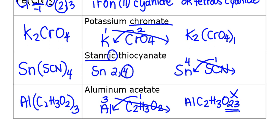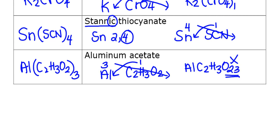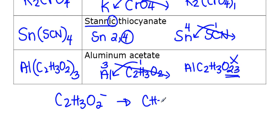One other thing to note about acetate: there are two ways to write it. The condensed form is C₂H₃O₂, and the expanded form looks different but contains the same number of atoms. You might see either version. Make sure you get lots of practice with your new list of ions — there are worksheets available, and the more you practice, the better you'll do.